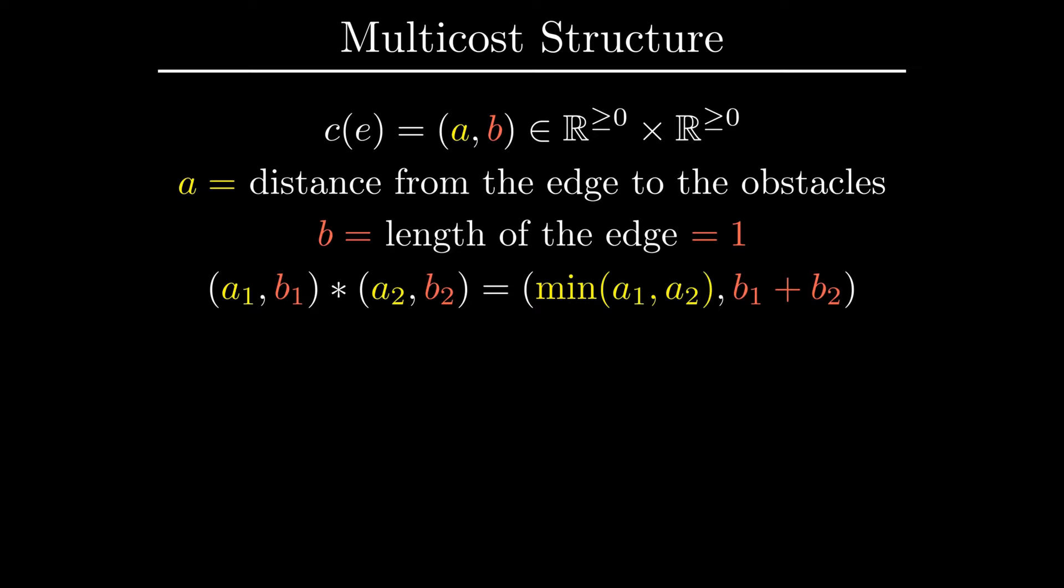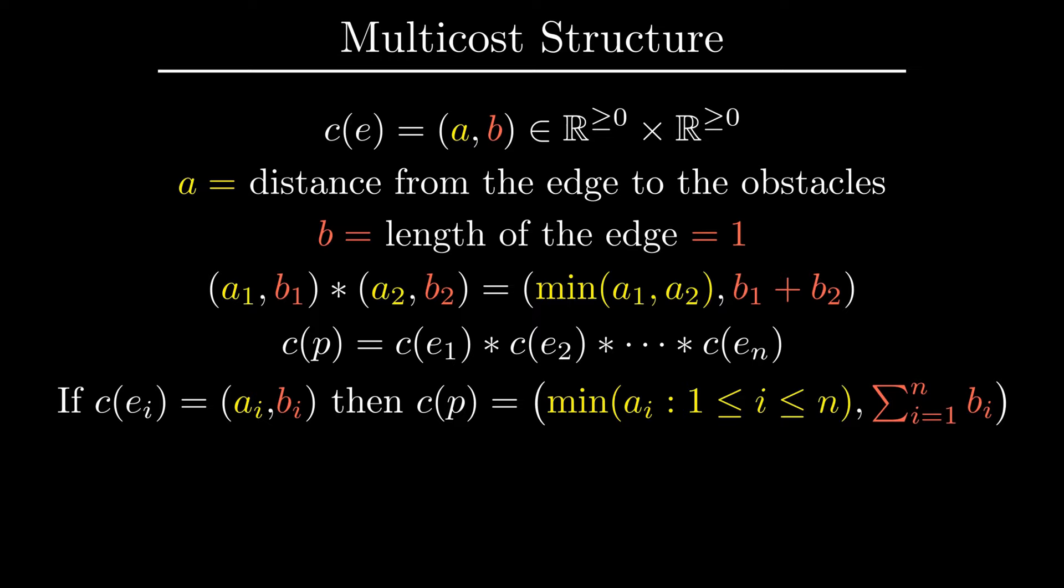In order to define cost of a path, we need to define a composition operation, which here takes the minimum of the first components and sums the second components. Cost of a path then becomes as follows: the first component is the minimal distance to obstacles, and the second component is the length of the path. Finally, we define an ordering on pairs, which corresponds to optimal paths having the smallest cost.